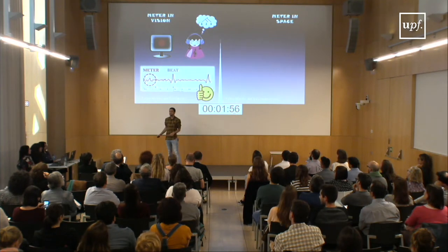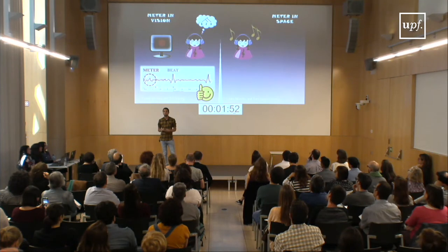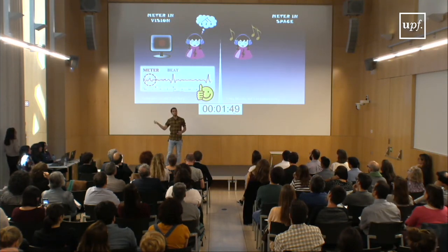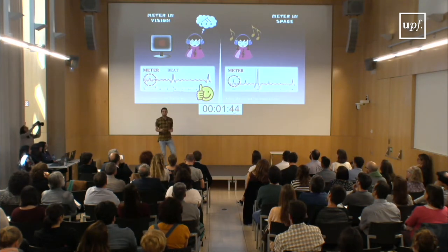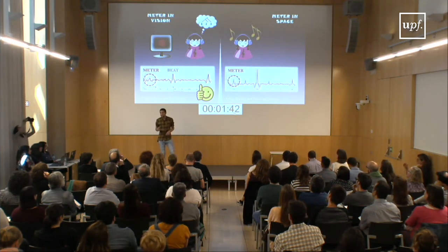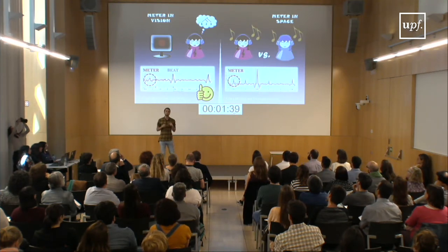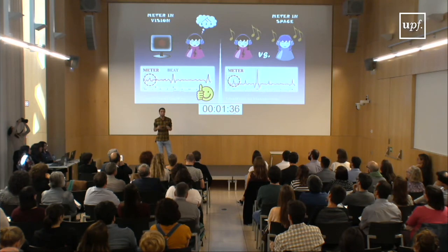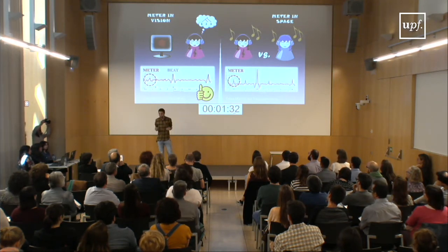In a second study, we presented participants with sounds alternating in space — left, right, right, left, right, right — also a ternary pattern. And we found a peak appearing at this frequency. What was interesting here is that we compared musicians and non-musicians, and we found that the peaks for musicians were higher, meaning that more neural populations were synchronizing to the rhythms.